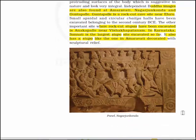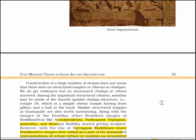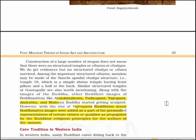Other important sites where rock-cut caves have been excavated include Anakapalle near Visakhapatnam. In Karnataka, Sanadi is the largest stupa site excavated so far and also has a stupa like the one at Amaravati, decorated with cultural relief. Here you will see the image of a panel from Nagarjunakonda. Construction of a large number of stupas does not mean that there were no structural temples, viharas or chaityas. We do get evidences but no structured chaityas or viharas survived.